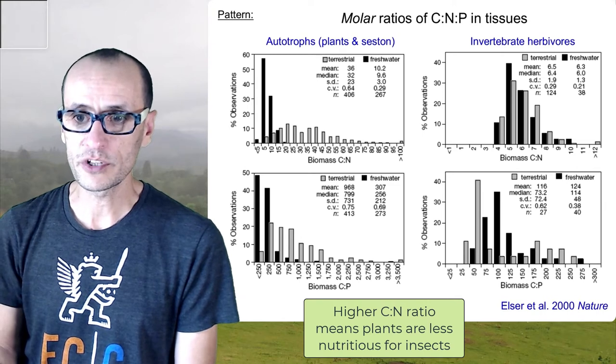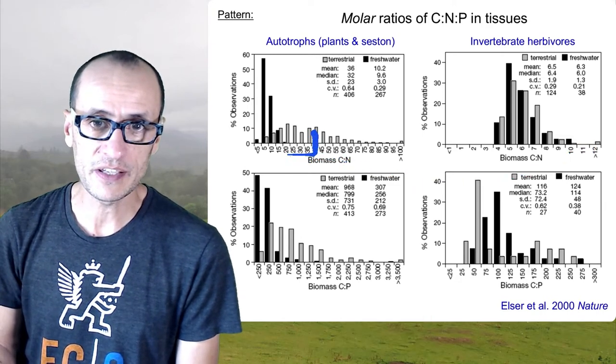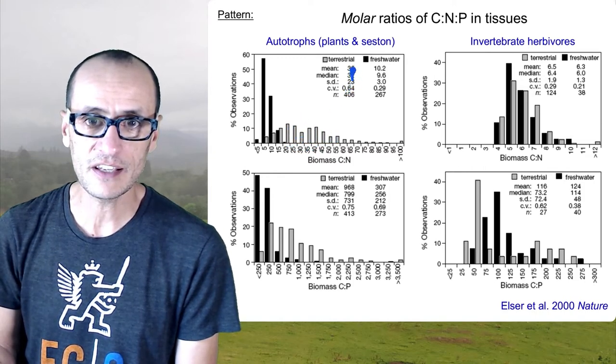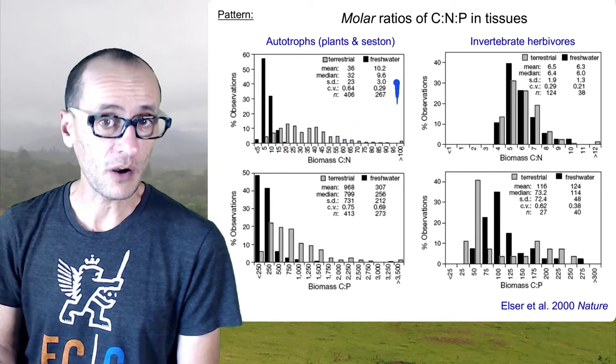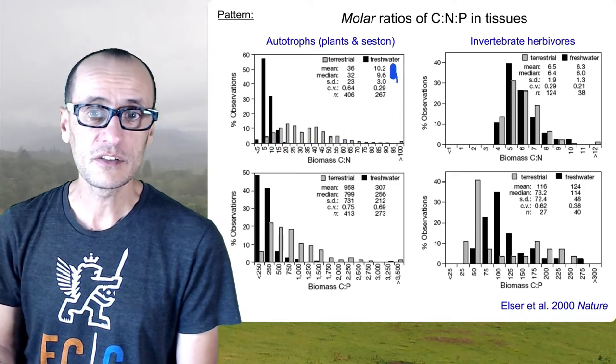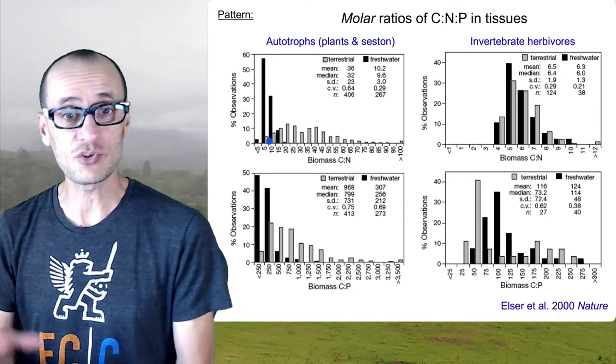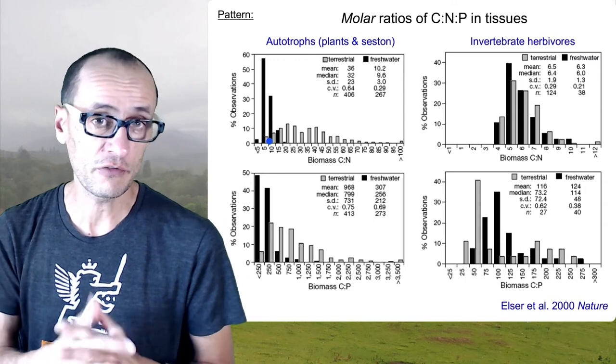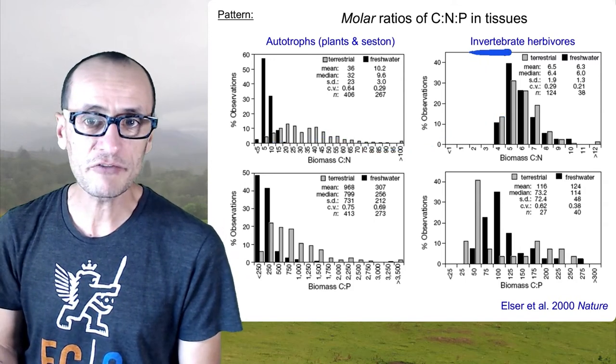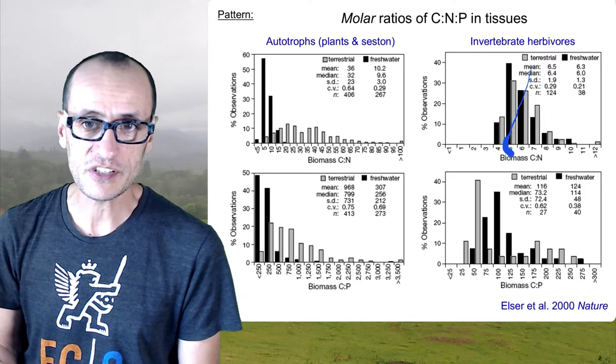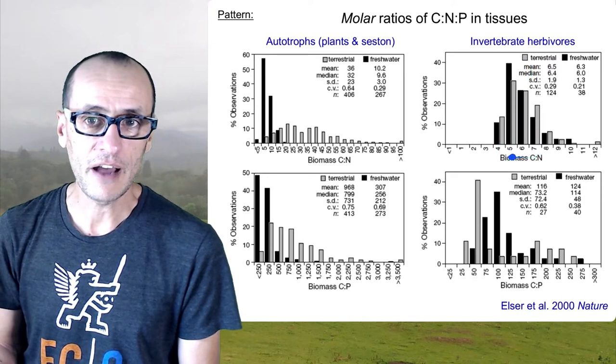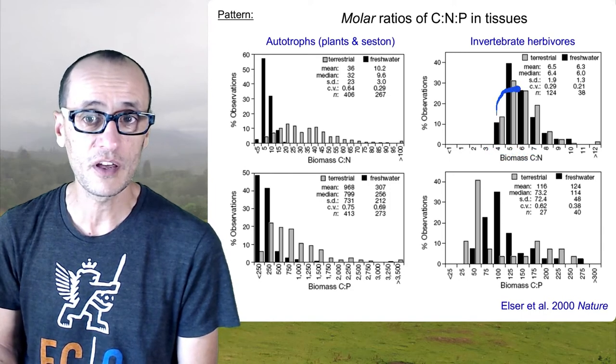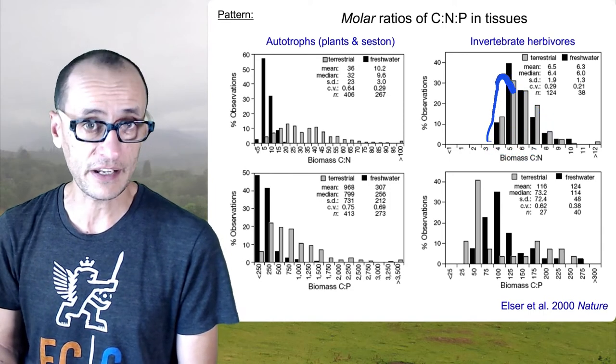And for terrestrial plants, the average ratio is somewhere here in the 36 range, I think is the average, but there's quite a bit of a spread. For aquatic autotrophs, this ratio is actually closer to 10, meaning that there's relatively more nitrogen to carbon in aquatic autotrophs. If you look at invertebrate herbivores here in terrestrial systems, you'll find that the average ratio is somewhere here in the 5 to 6 range. And this is true for both terrestrial and aquatic herbivores.